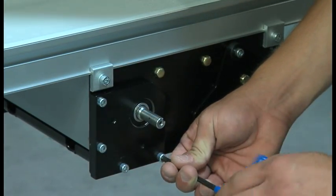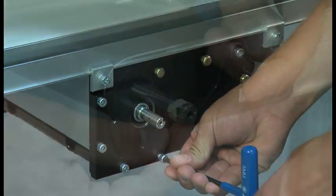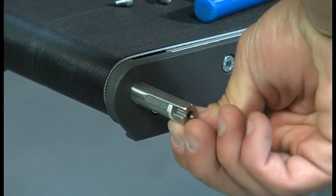Assembling a center drive gear motor is very much like assembling an end drive gear motor. Locate the conveyor output shaft and remove the tape which holds the key in place.